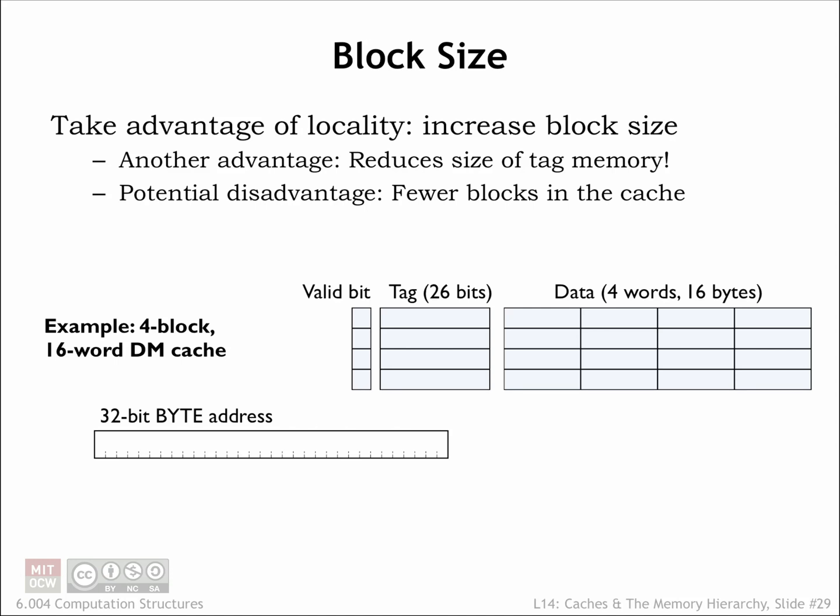We can tweak the design of the direct map cache a little to take advantage of locality and save some of the overhead of tag fields and valid bits. We can increase the size of the data field in a cache from one word to two words or four words, etc. The number of data words in each cache line is called the block size and is always a power of 2. Using a larger block size makes sense if there is a high probability of accessing nearby words — why not fetch a larger block of words on a cache miss, trading the increased cost of the miss against the increased probability of future hits.